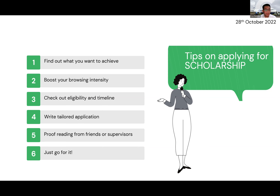Number four: write a tailored application. This is why the first tip — find out what you want to achieve — is so important, because really contemplating takes most of your time. You need to understand why you want to do this and what your future plan is, and why this scholarship can help you a lot in the future. Then you can write a tailored application. If you make a real effort to understand, the result will come in the end.